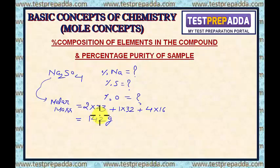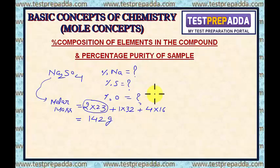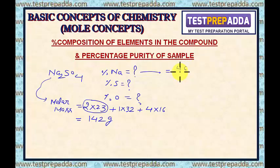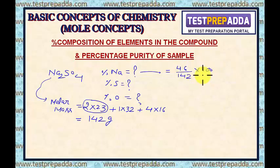Out of 142 grams, the contribution of sodium is 2 × 23 = 46 grams. So if I want to find the percentage of sodium, I will write the mass contribution of sodium upon the total, that is 46/142 × 100. The value comes as 32.394%.